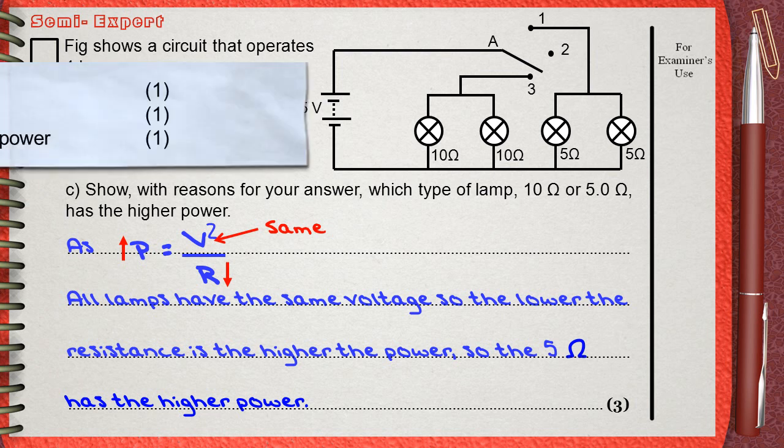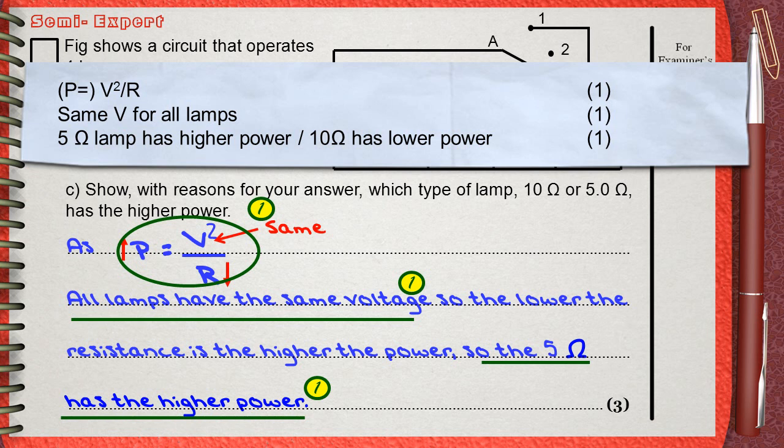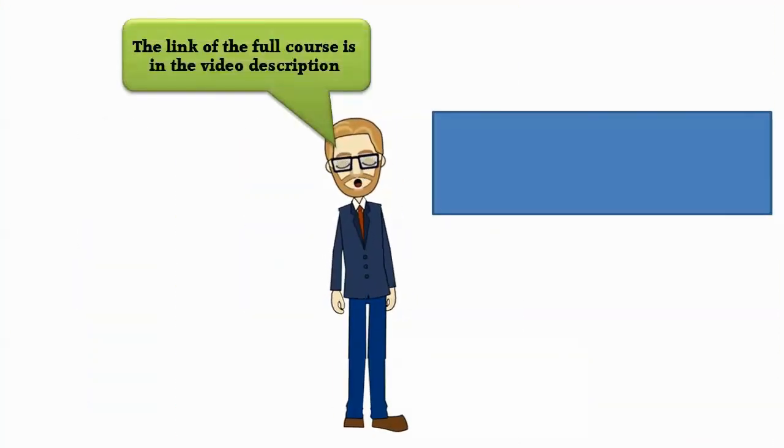Back to the mark scheme. The use of P equals V square over R gives 1 mark. This is what we did here. Mentioning that in this case voltage is the same for all lamps, because this is a parallel connection, gives the other mark. This is what we said here. And the 3rd mark is for mentioning that the 5 ohm lamps has higher power. You can also say that the 10 ohm lamp has the lower power. This is what we said here. This is the 3rd mark of the question. Thank you.